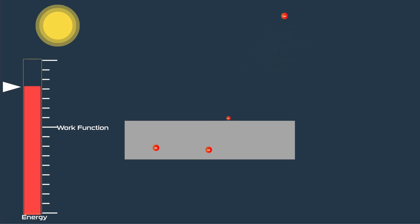With this kinetic energy, electrons move freely. This is called the photoelectric effect.